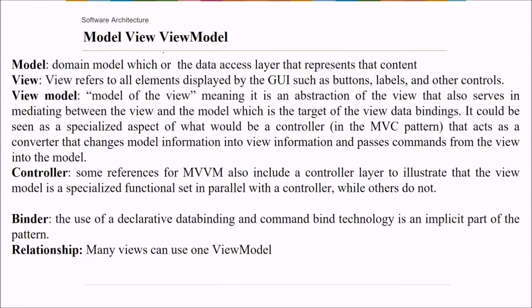Then we have model view view model. Model view view model. So model is the domain model which or the data access layer that represents that content. The view refers to all the elements displayed by the GUI such as buttons, labels and other controls. The view model which is the model of the view. This one. It is an abstraction of the view that also serves as mediating between the view and the model. These two. Which is the target of the view data bindings. So it could be seen as a specialized aspect of what we saw in the MVC model. That acts as a converter that changes the model information to view information and passes the command from the view into the model.